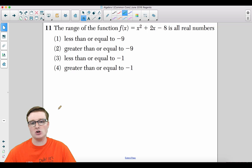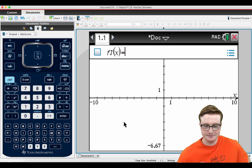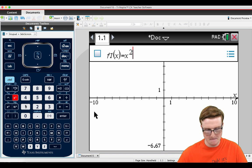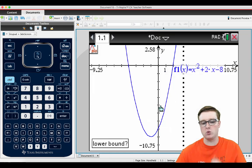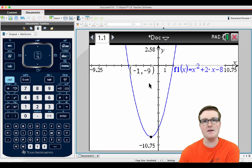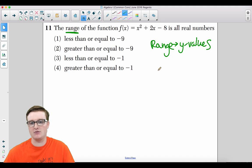Moving on to the next one, number 11. The range of the function f of x equals x squared plus 2x minus 8 is all real numbers for what? So the range, remember that your range is the y value or the y values. So if you were to just graph this in your calculator and you were to type in x squared plus 2x minus 8 and you press enter, the range is from your minimum upward. So your minimum value for the y value is negative 9 and then it just extends upward forever. So therefore, your range are values greater than or equal to negative 9, which is going to be choice 2.